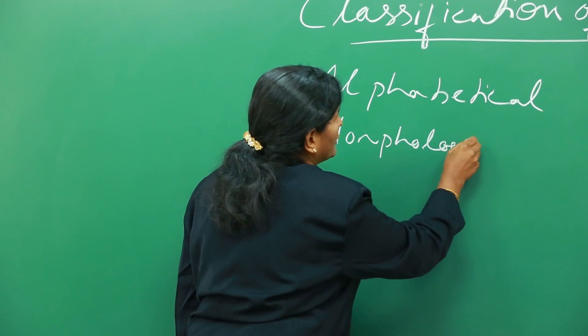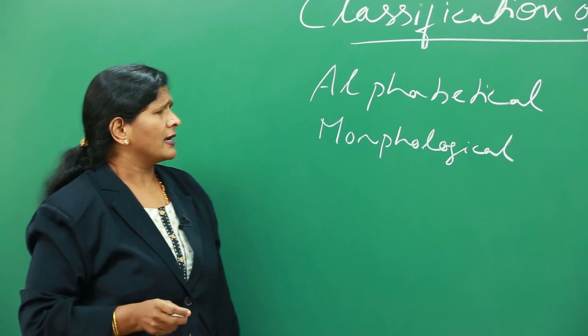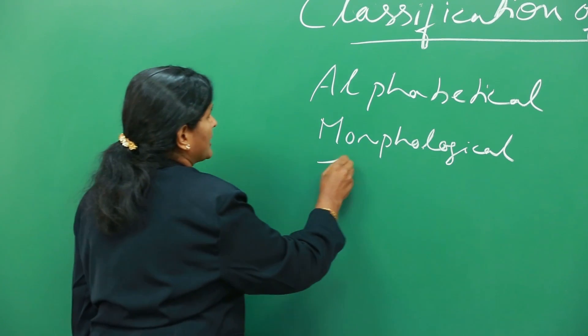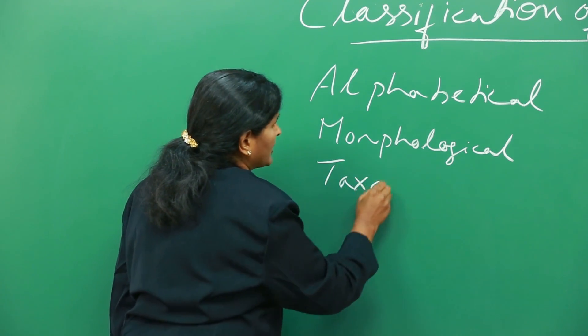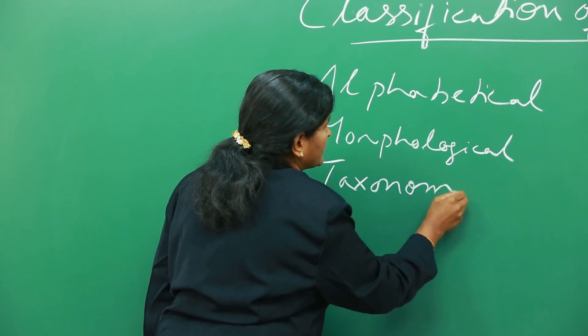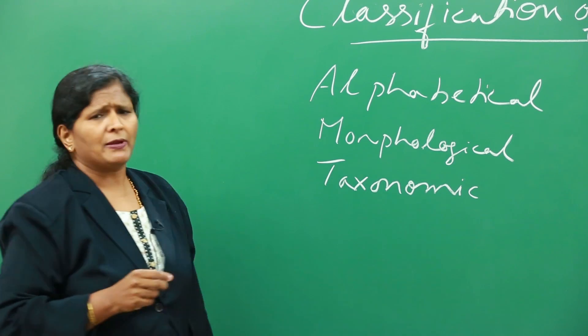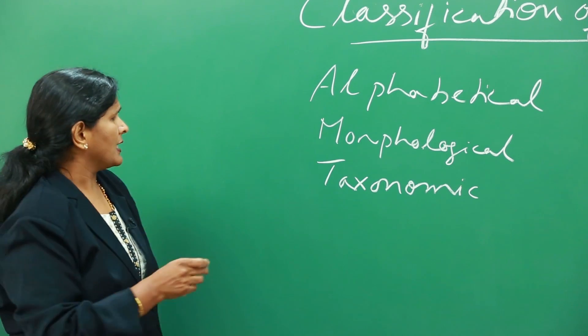It is called morphological classification, where the drugs are classified as per the morphology. Then you have another method of classification called taxonomic classification. Once the taxonomy of the plants is known, we can classify the plants as per the taxonomic classification.